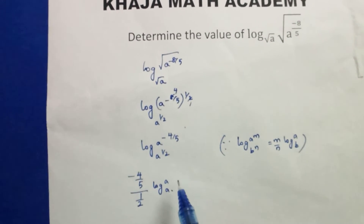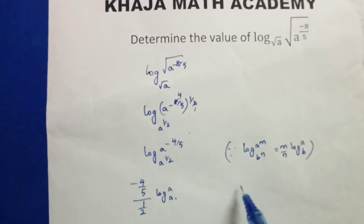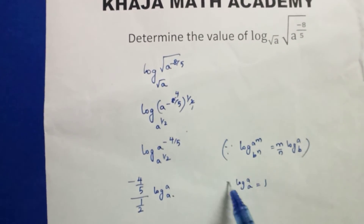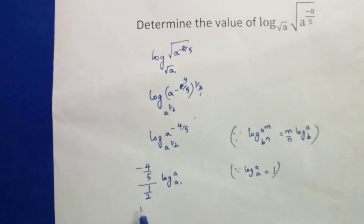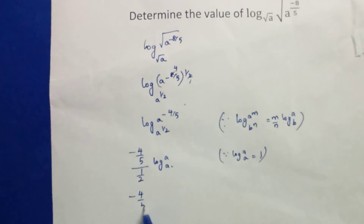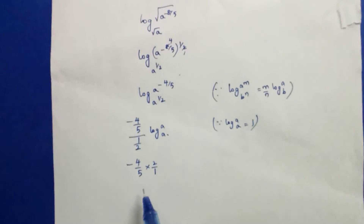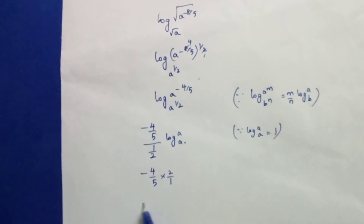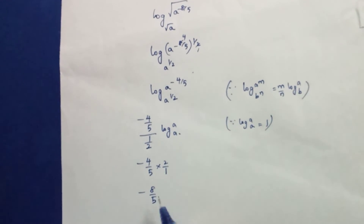Since log a to the base a equals 1, we have minus 4 by 5 multiplied by 2 by 1, so the solution is minus 8 by 5.